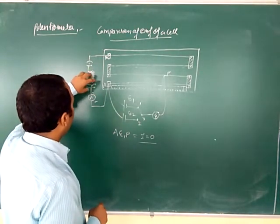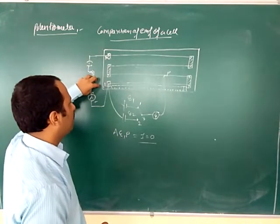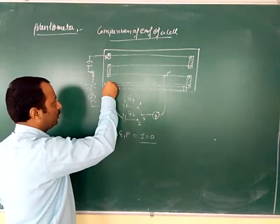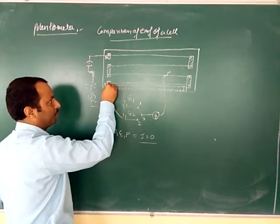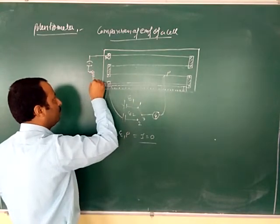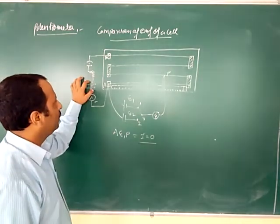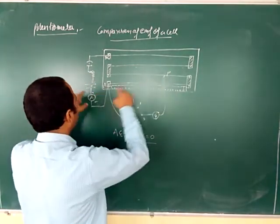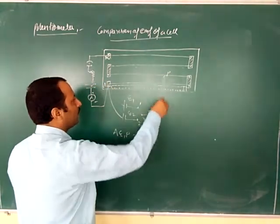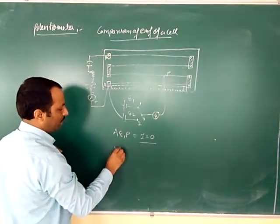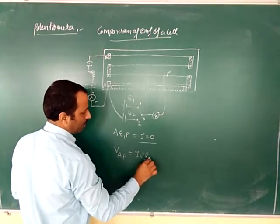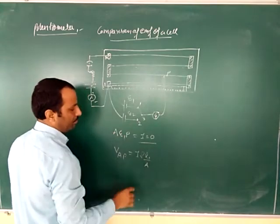When no current flows in that arm, we can say the potential difference of the cell has become equal to the potential difference across that segment of wire. At point A the positive potential is the same, and at point P the potential equals the negative terminal of the cell. Since no current is flowing, the potential difference across A and P equals the EMF of the cell. So we write: potential difference AP = I · ρ · L1 / A, where this length is L1.